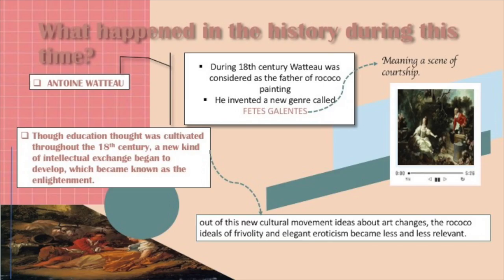Though Enlightenment thought was cultivated throughout the 18th century, a new kind of intellectual exchange began to develop, which became known as the Enlightenment. Out of this new cultural movement, ideas about art changed, and the Rococo ideals of frivolity and elegant eroticism became less and less relevant.